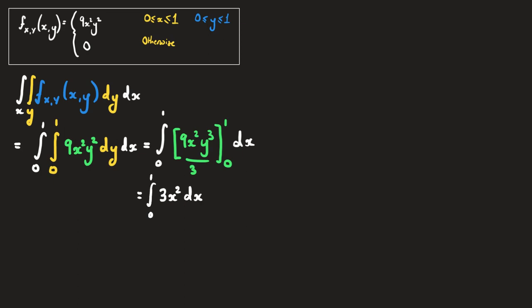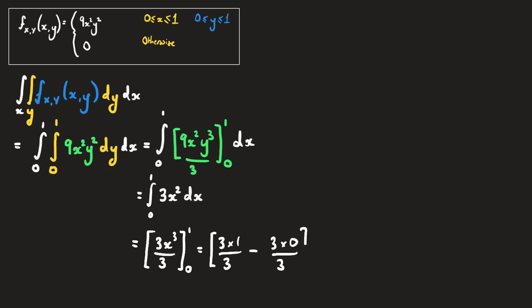Integrating 3x² with respect to x gives 3x³/3 evaluated between 1 and 0, which equals 3 times 1/3 minus 3 times 0/3, which is 1 minus 0, equal to 1. Since the volume under our probability density function equals 1, this is a well-defined probability density function.